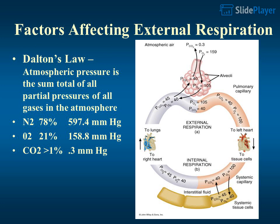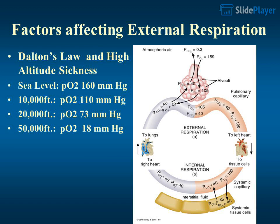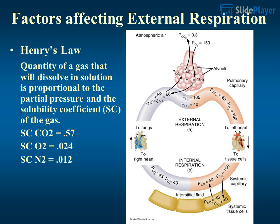Dalton's law states that atmospheric pressure is the sum total of all partial pressures of all gases in the atmosphere: N2 is 78% at 597.4 mmHg, O2 is 21% at 158.8 mmHg, and CO2 is less than 1% at 3 mmHg. At high altitude, pO2 decreases: at sea level it is 160 mmHg, at 10,000 feet it is 110 mmHg, at 20,000 feet it is 73 mmHg, and at 50,000 feet it is 18 mmHg.